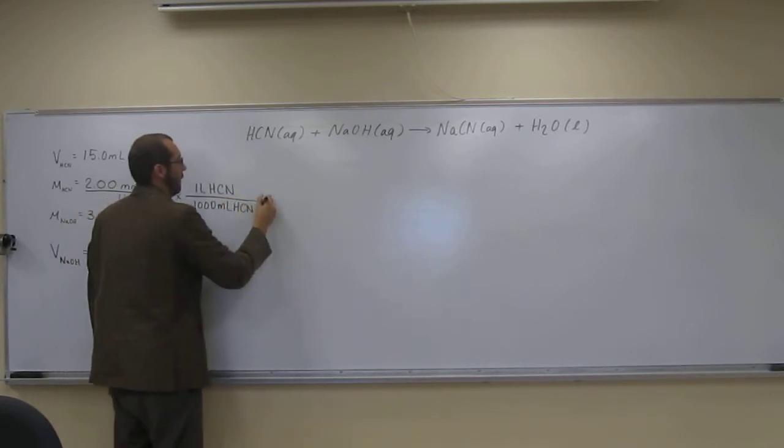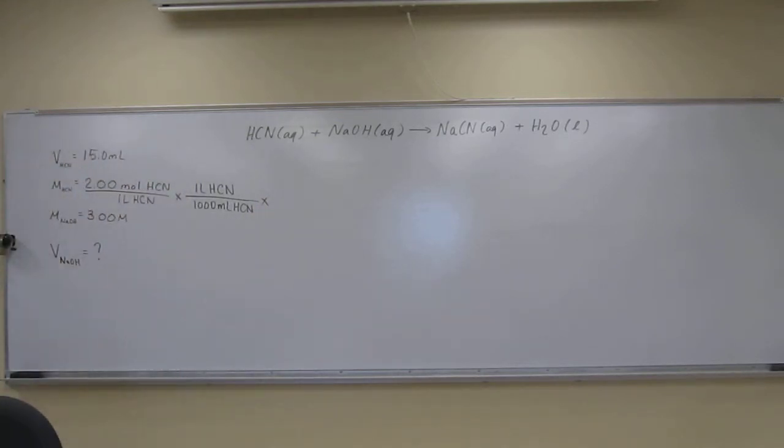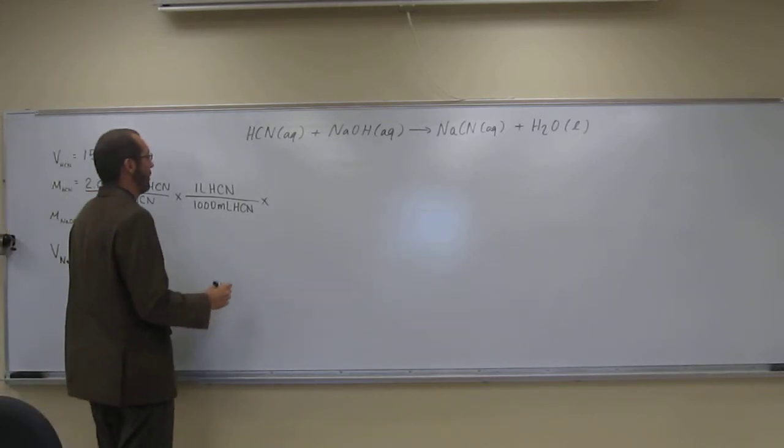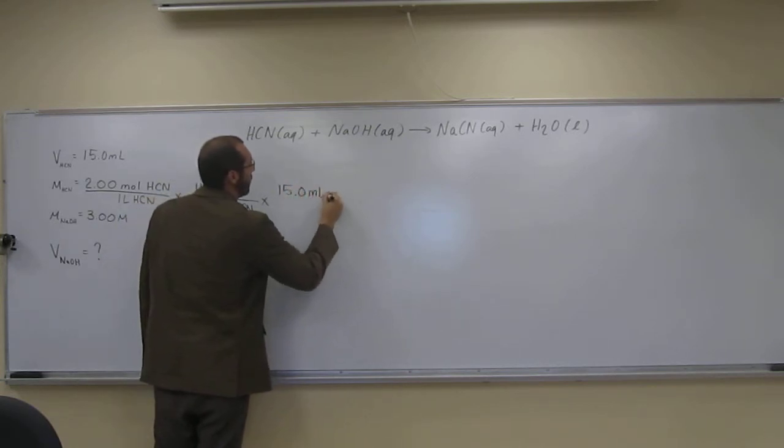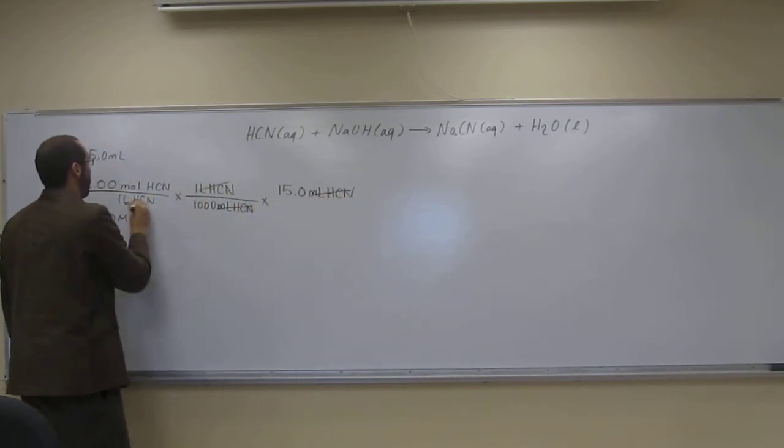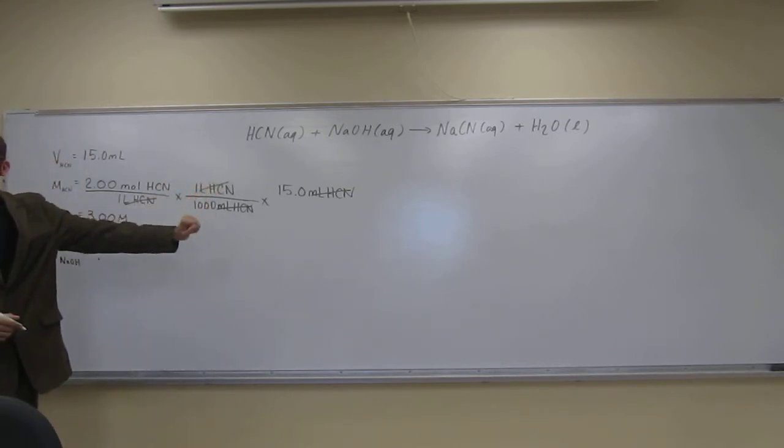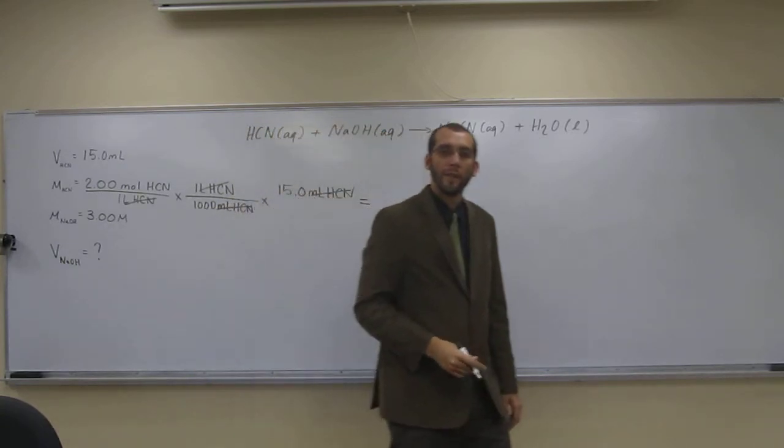Is that for me? I think it is. 1,000 milliliters of HCN. So we're going to say 15.0 milliliters HCN like that. That cancels out everything to give us moles of HCN. Do you see that? Does that make sense?